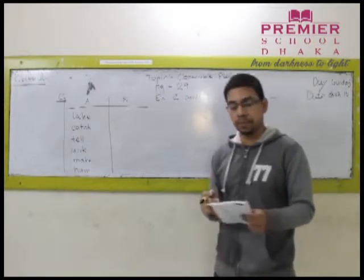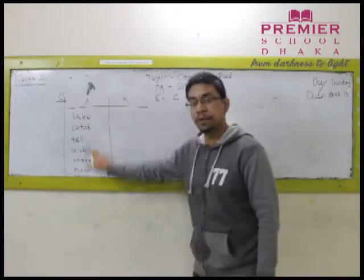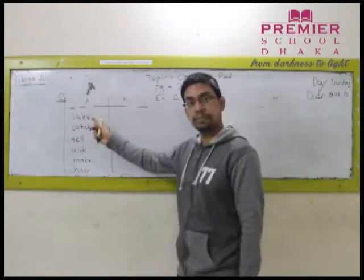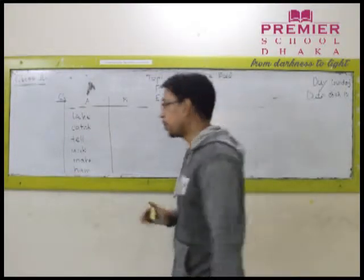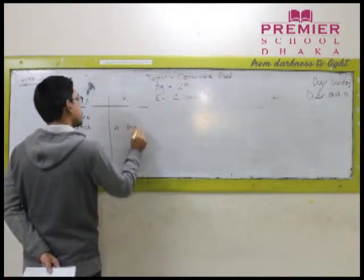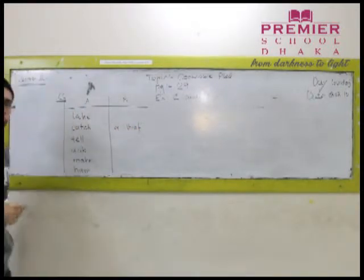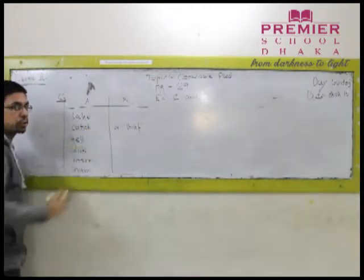Now, we have the first option from column B which is thief. Which one do you think goes with thief, children? Take a thief? No. Does it go with catch a thief? Of course. So, let's add it to catch a thief. See what I am doing here folks?